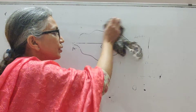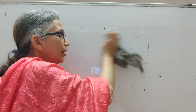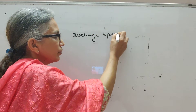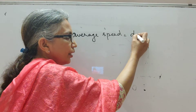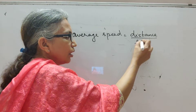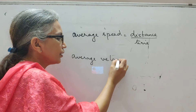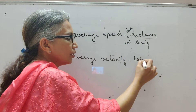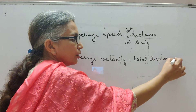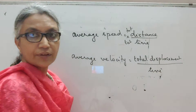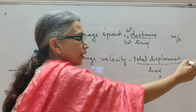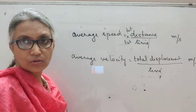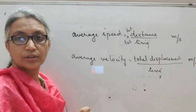After this discussion, in your notes we go on to discuss average speed and average velocity. Average speed is defined as total distance divided by total time, which you have learned in 9th standard. Average velocity is defined as total displacement divided by total time. Both have the SI unit of meter per second. Because displacement is a vector quantity, velocity is also a vector quantity. Distance is scalar, so speed is also a scalar quantity.